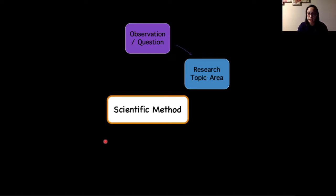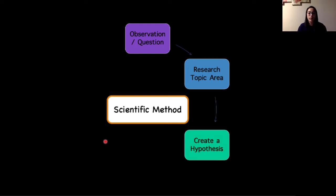Researching the topic area, doing a literature review to get more background information on what you're trying to question in the universe would be the next step. From that research you can create a hypothesis—an informed decision or prediction of what you think will occur based on what is known.